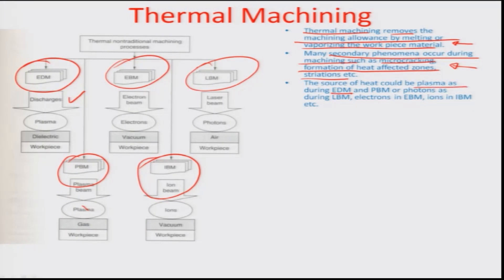Sources of heat include EDM — also known as electro-spark machining or electro-discharge machining — plasma beam machining, laser beam machining using photons, electron beam machining (EBM), and ion beam machining.